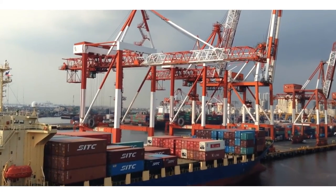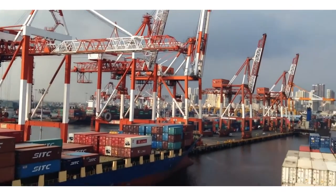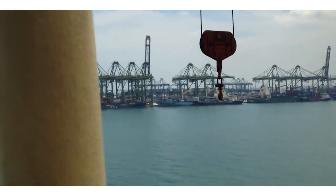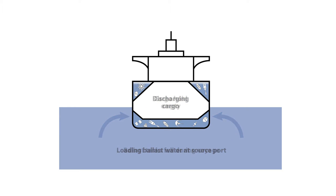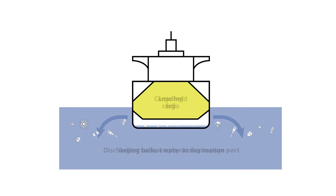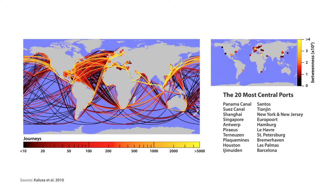The second major process causing reassembled species communities has to do with globalization in the literal sense. The globalization of the economy means that huge cargo ships cross our major ocean basins on a daily basis. Those cargo ships need ballast water in specialized tanks to keep their balance when cargo is unloaded in port. Within this ballast water, huge amounts of small planktonic organisms, propagules of larger organisms, or larvae are transported all around the globe.